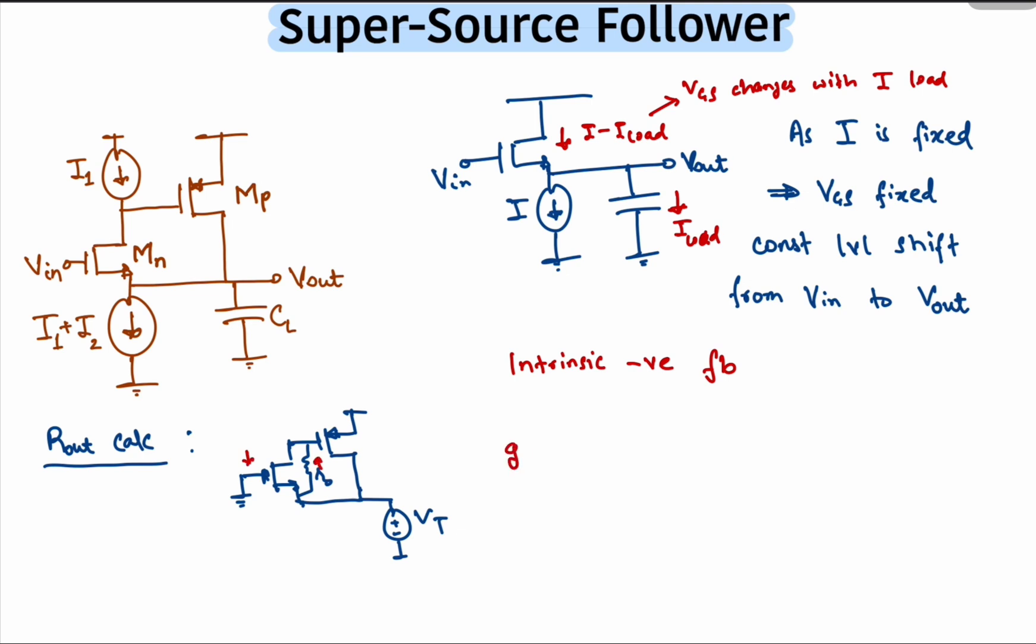The drop across Rn would be gm times Vt times Rn, and thus the gate voltage of M2 would be Vt plus gmVt times Rn. That voltage would force Mp to pull up a current of gmVt times Vg.